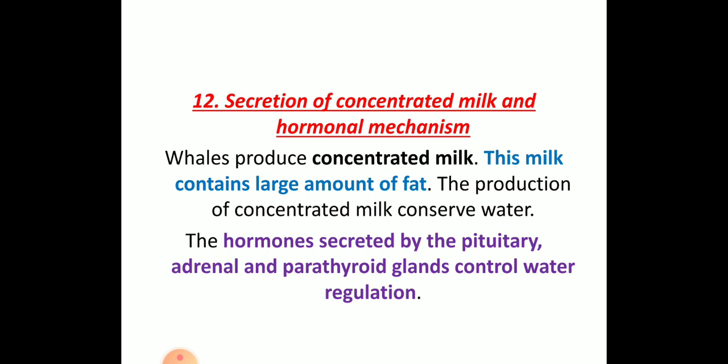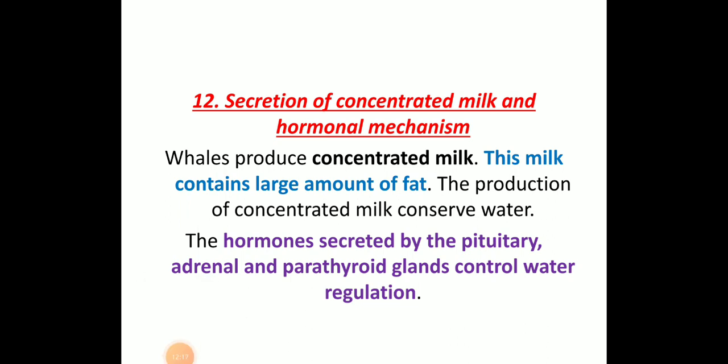Finally, secretion of concentrated milk — this occurs in whales, where high amounts of fat are present in the milk. If fat content is less, the milk contains a higher amount of water and is less concentrated. Whales produce highly concentrated milk. Hormonal mechanisms also play a role: hormones secreted by the pituitary, adrenal, and parathyroid glands control water regulation. That is how osmoregulation takes place in mammals.